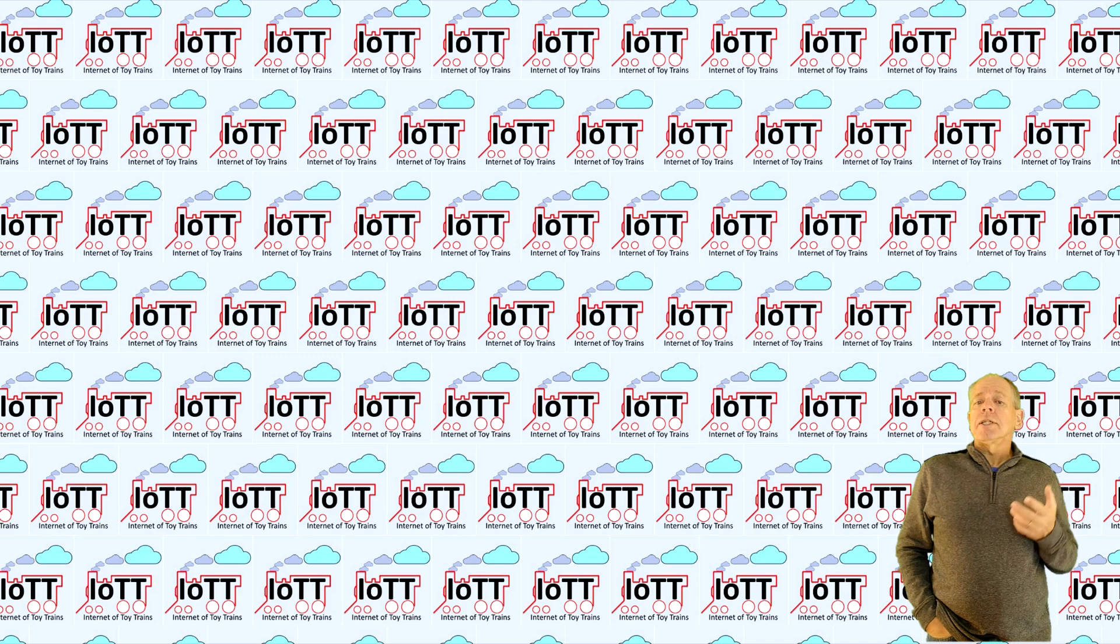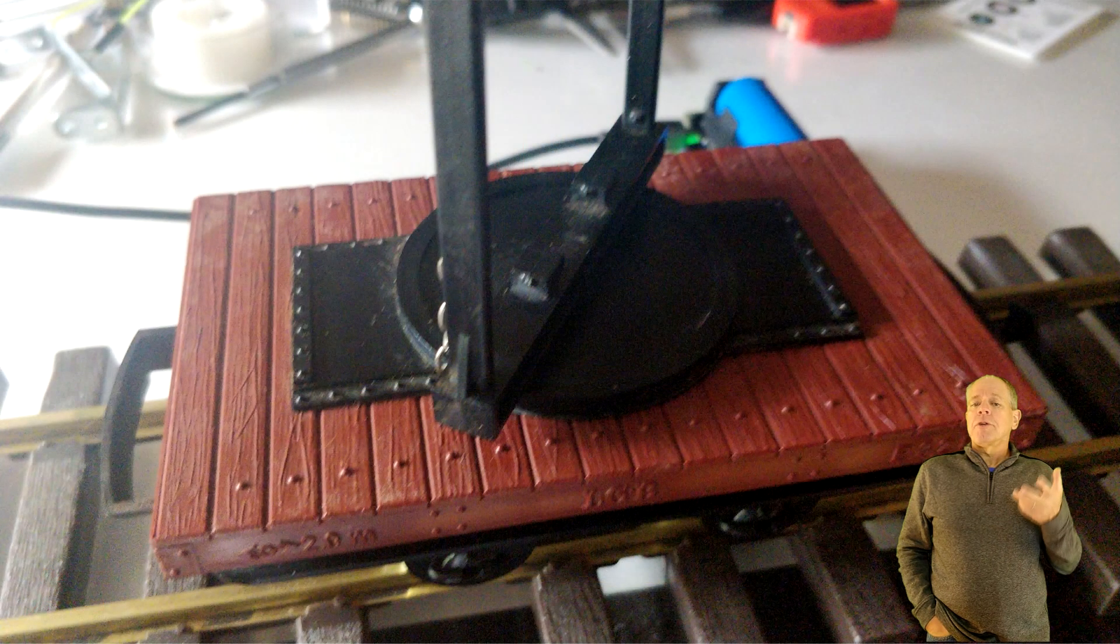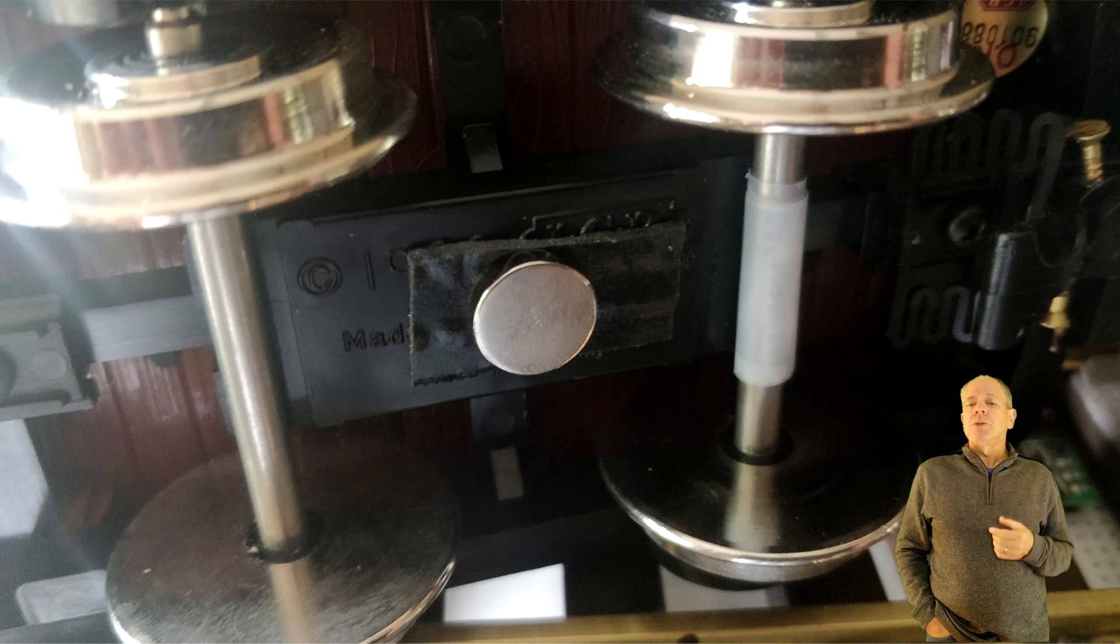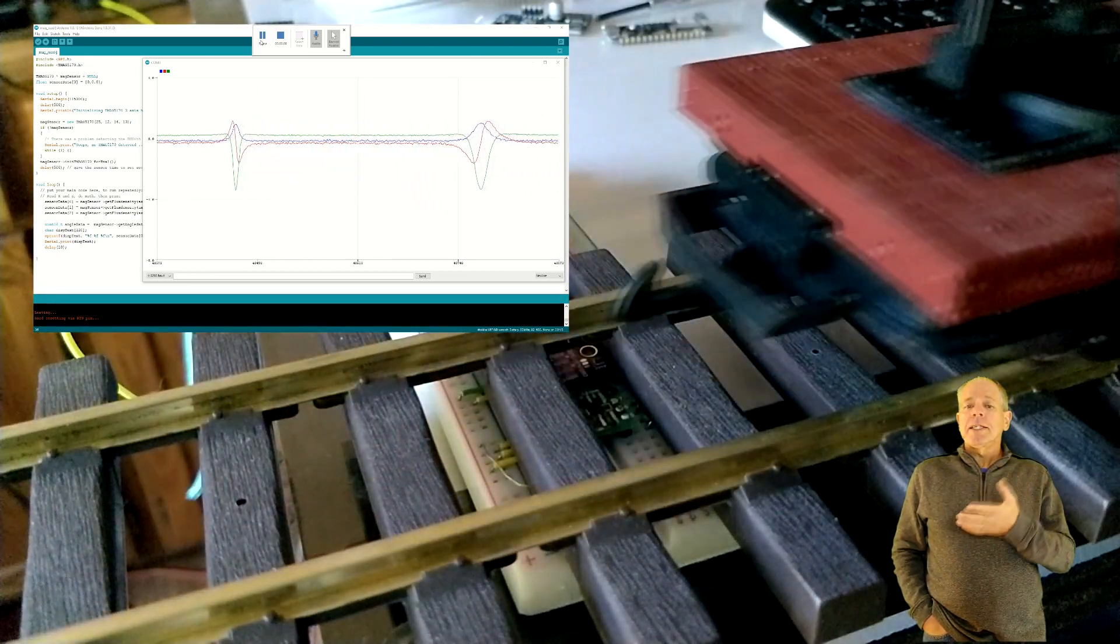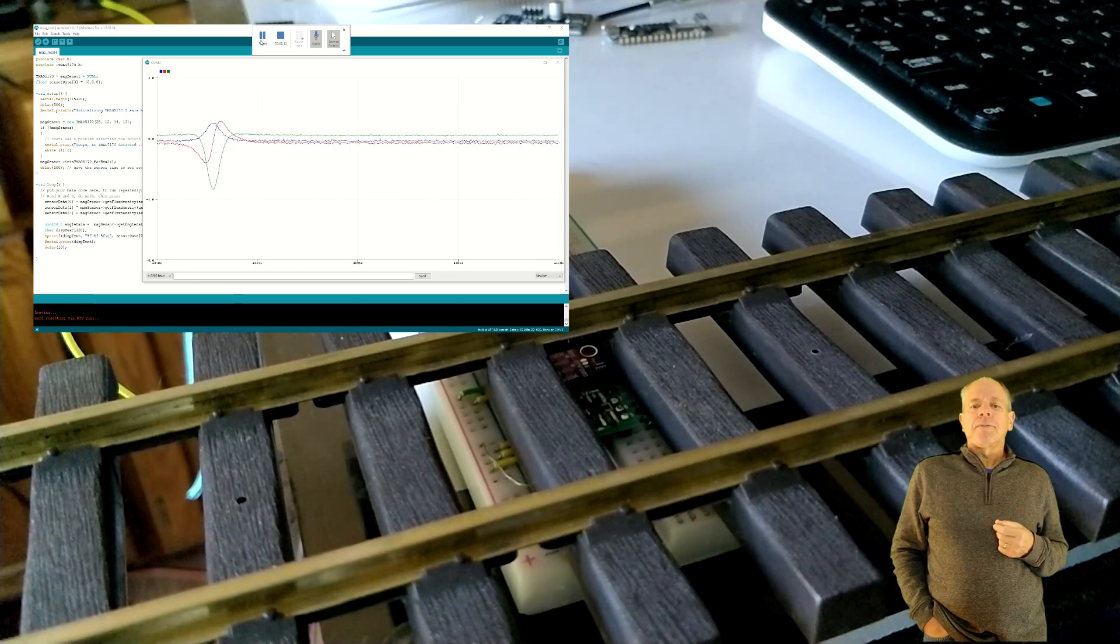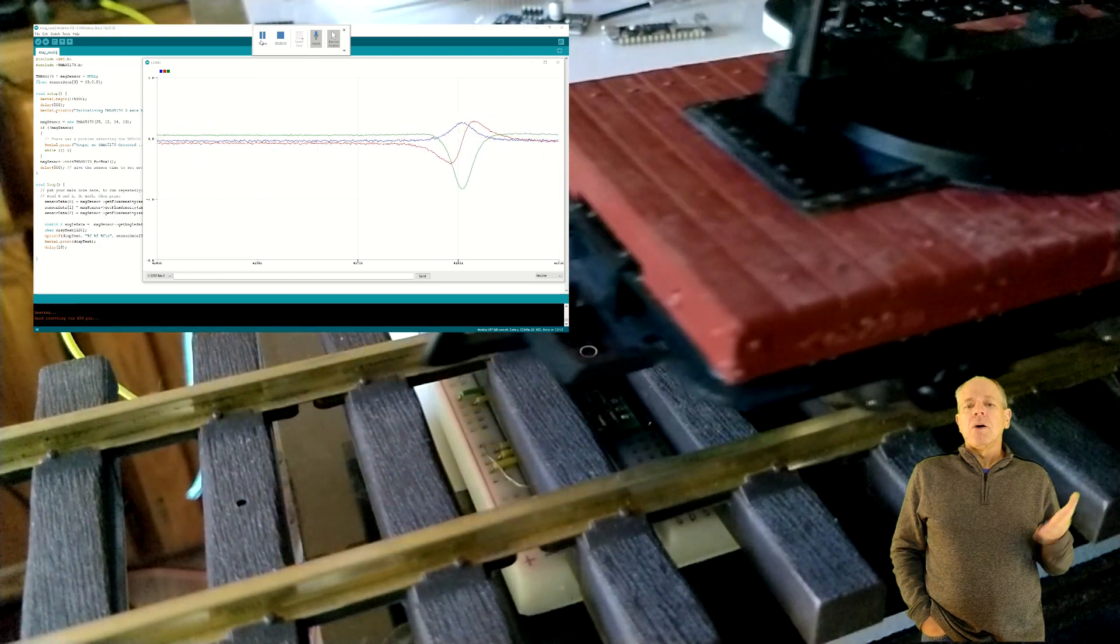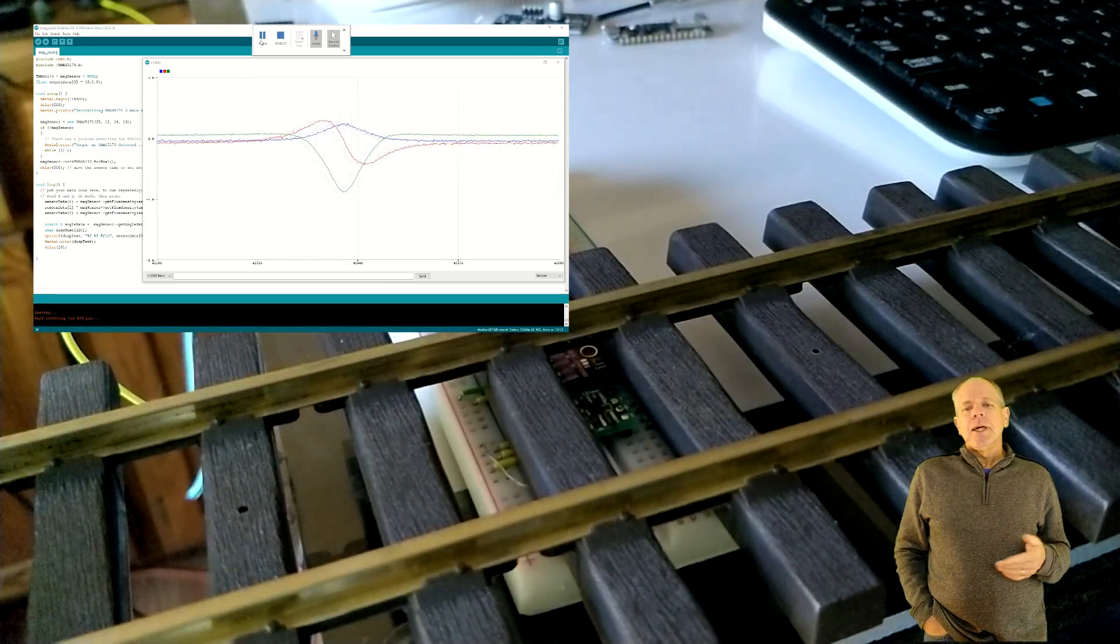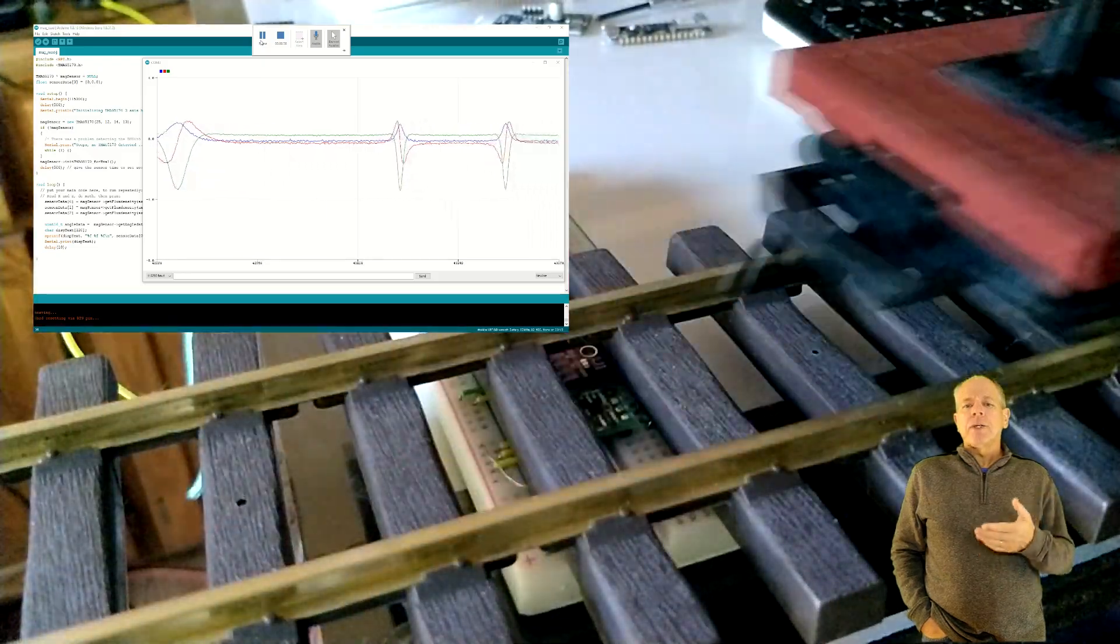The first thing I tried was using the TMAG 5170 as an axle counter. For that I placed it underneath the track and installed a small magnet on the frame of a car. I then wrote a simple sketch that initializes the sensor and then simply reads the magnetic values of each axis and displays it in the built-in plotter window of the Arduino IDE. When the car is pushed over the sensor we can see two of the sensors giving a pulsing signal similar to the output of an optical encoder. This allows to detect the presence of the car and its direction as well. So this is a clear advantage compared to a single Hall element which only can detect presence. So with this approach it would easily be possible to implement a block detector system that knows how many cars or locos are in a particular block, simply based on counting the in and outgoing cars at each block boundary.